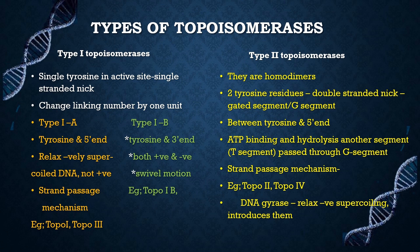In Type 1a, the covalent intermediate is formed between tyrosine and the 5' end of the nicked DNA. Their function is to relax negatively supercoiled DNA — they cannot relax positively supercoiled DNA. They can also unknot single-stranded circular DNA. They relax supercoiling by a strand passage mechanism in which one strand of DNA is passed through a gap in the next strand. Examples include topoisomerase 1 and topoisomerase 3.